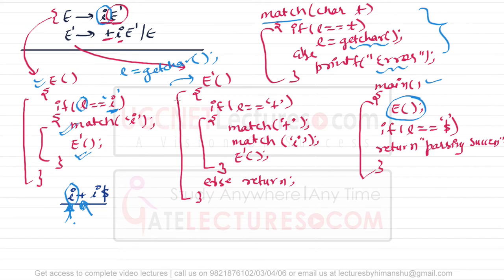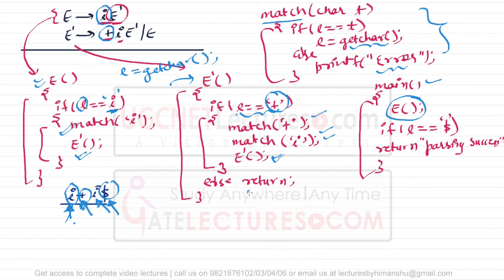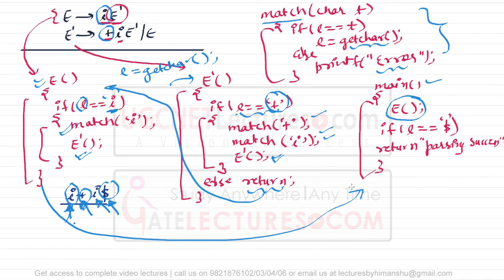In e', the next character is '+'. Since '+' matches, we match '+', then the next symbol i matches, and we call e' recursively again. Now the next symbol is dollar, which does not match '+', so we return. The function has executed all statements and returns to main.